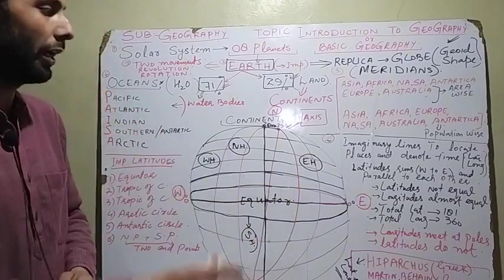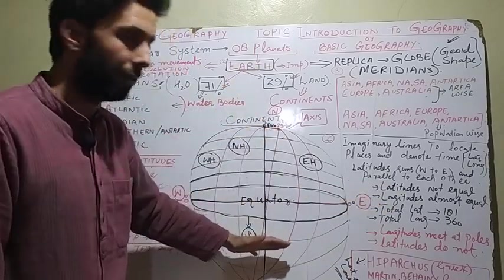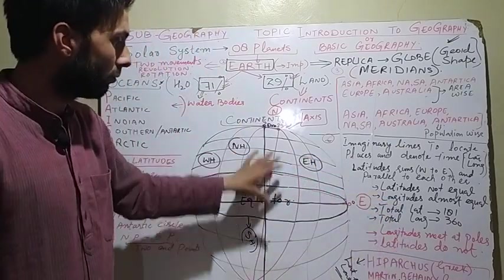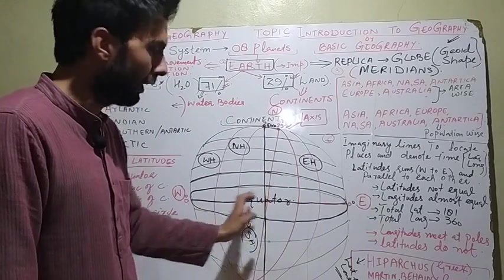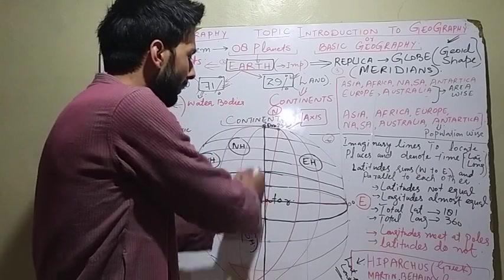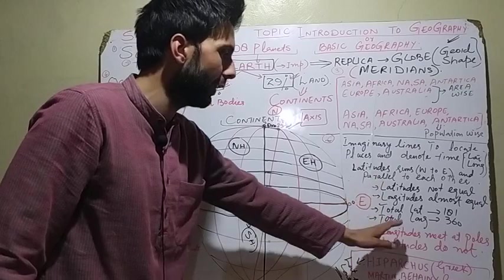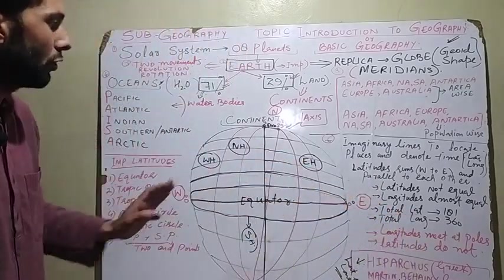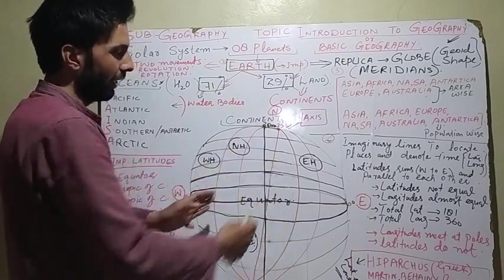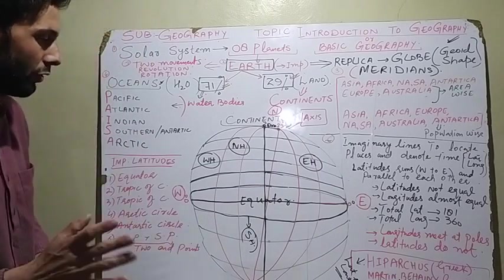To recap: total latitudes — northern hemisphere has 90, southern hemisphere has 90, plus the equator makes 181 total latitudes. The prime meridian divides Earth into eastern and western hemispheres. Eastern hemisphere has 180 longitudes, western hemisphere has 180 longitudes — 180 plus 180 equals 360 total longitudes.